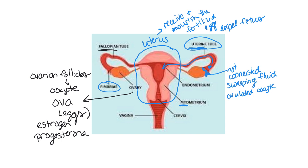The uterus is made of three layers. The outermost layer is the perimetrium — remember, 'peri' means around. The main middle layer is the myometrium — remember, 'myo' means muscle — so that's a very muscular layer that can help push the baby out when the baby is born. And then the innermost layer is what's called the endometrium — 'endo' meaning inner, inside. This is a mucosal layer.